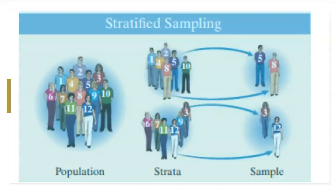Here is a little image from a textbook, referenced in the description. Basically, you take the population, you break it into groups that are disjoint — meaning there's no overlap — and then you randomly pull from each group, and that's your sample.